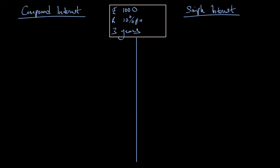The compound interest formula: A is equal to P times (1 plus R by 100). The simple interest formula: SI is equal to PTR by 100. Simple interest is very important.